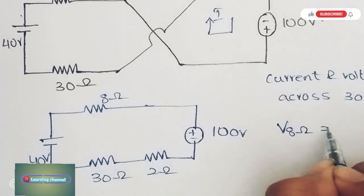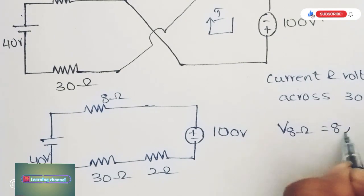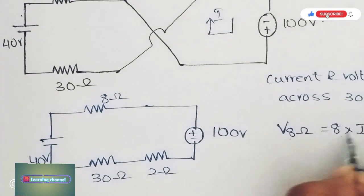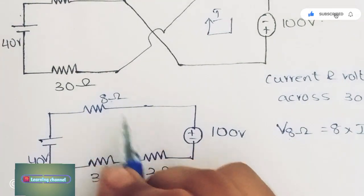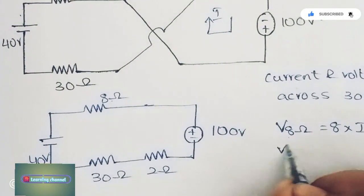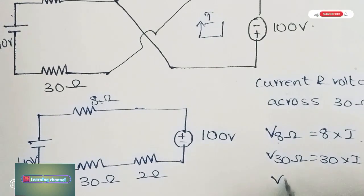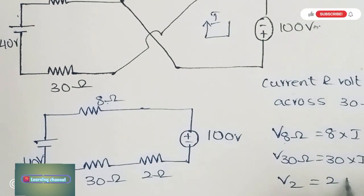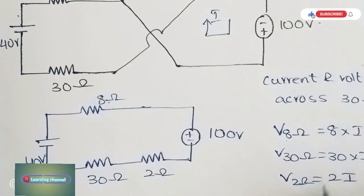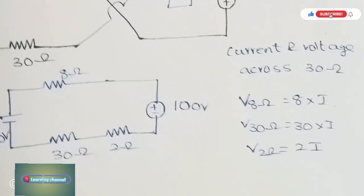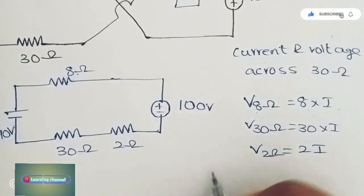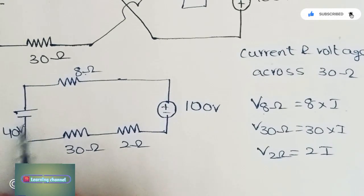From this, V_8Ω = 8 × I, since V = I × R. The resistance is 8Ω, so 8I. V_30Ω = 30I, and V_2Ω = 2I.